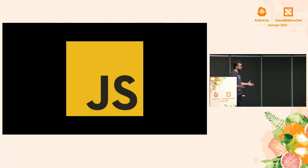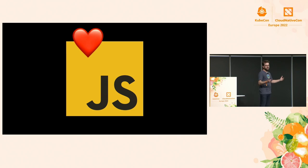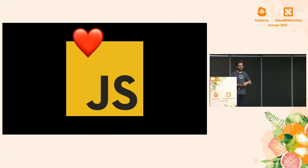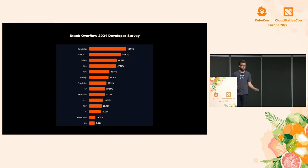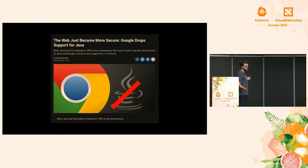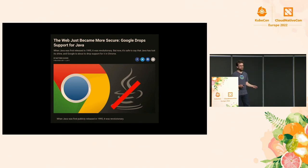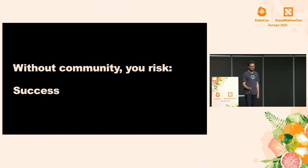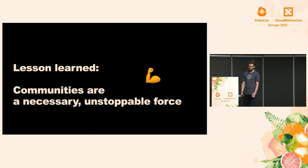JavaScript really took off and people loved it. Frameworks, snippets, and different libraries grew fast beyond Brendan Eich and the people at Netscape. Today, JavaScript is the most popular programming language in the world according to the Stack Overflow 2021 developer survey. Java on the web is basically no more. The contributor communities were so important in making this happen. Without a community, you risk success; without a community, you risk longevity. Communities are a necessary, unstoppable force.